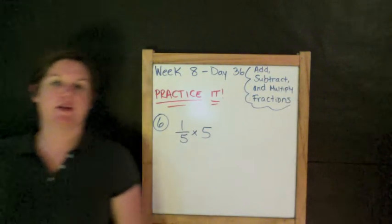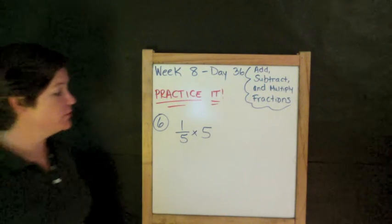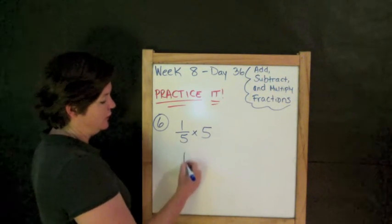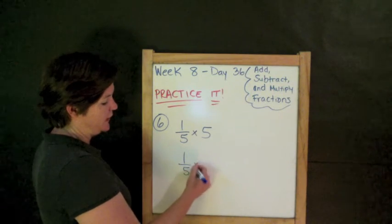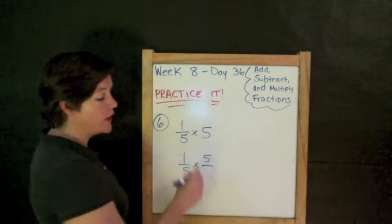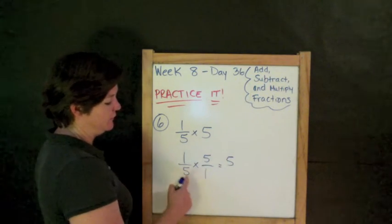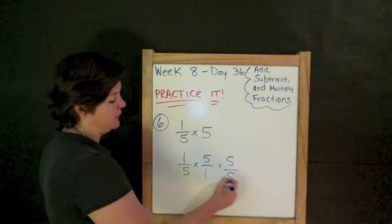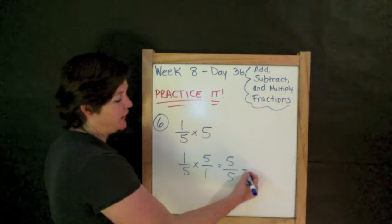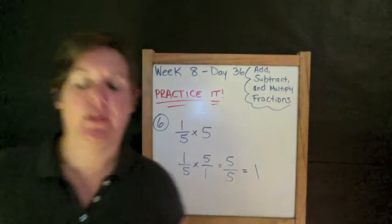All right, 1/5 times 5. To multiply like a boss, just multiply across. But first, I need to change my whole number to a fraction. So, 1/5 times 5 over 1. Multiply across. 1 times 5 is 5. 5 times 1 is 5. 5. Same numerator, same denominator. That equals 1. And you are finished.